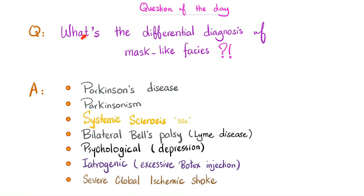Let me start by answering the question from the last video: what's the differential diagnosis of mask-like faces? You have Parkinson's disease and Parkinsonism. Parkinson's disease is the idiopathic form. Parkinsonism looks like the actual disease but you know its cause — it is secondary, for example secondary to medications or neurosurgery. Systemic sclerosis — all that skin thickening and tightness can lead to a mask-like face. Bilateral Bell's palsy, which you can see in Lyme disease. Psychologically, people who are depressed can also have a mask-like face.